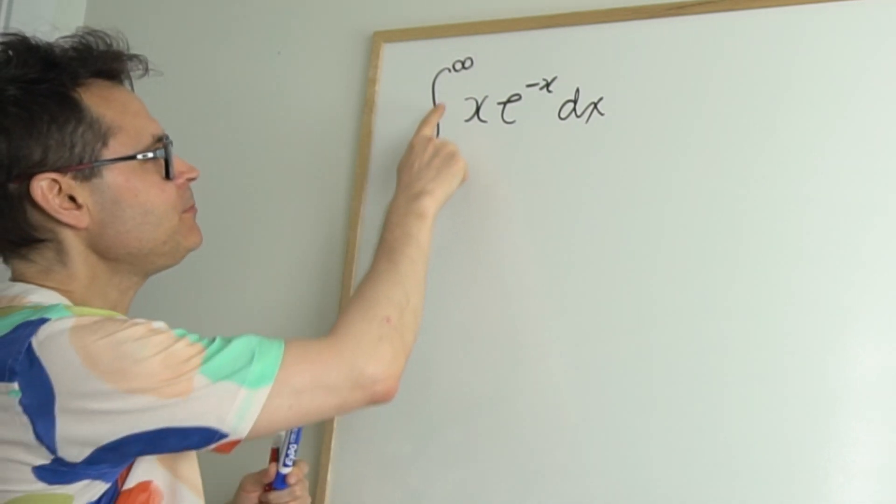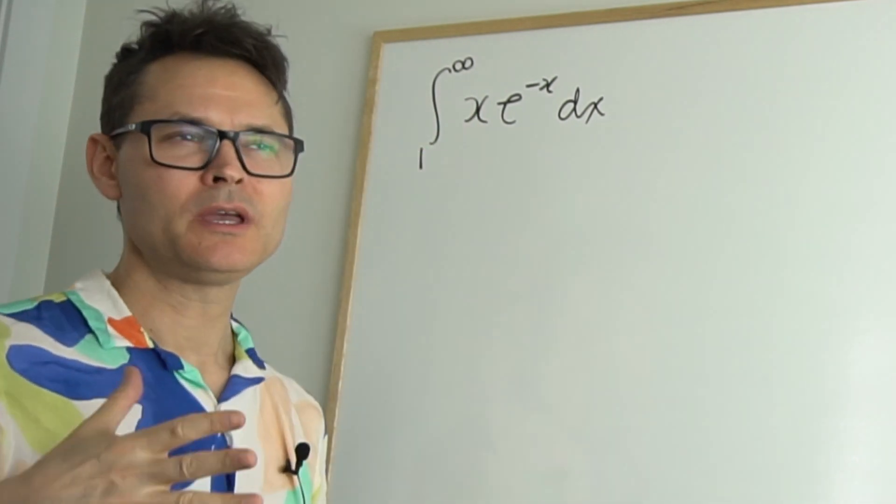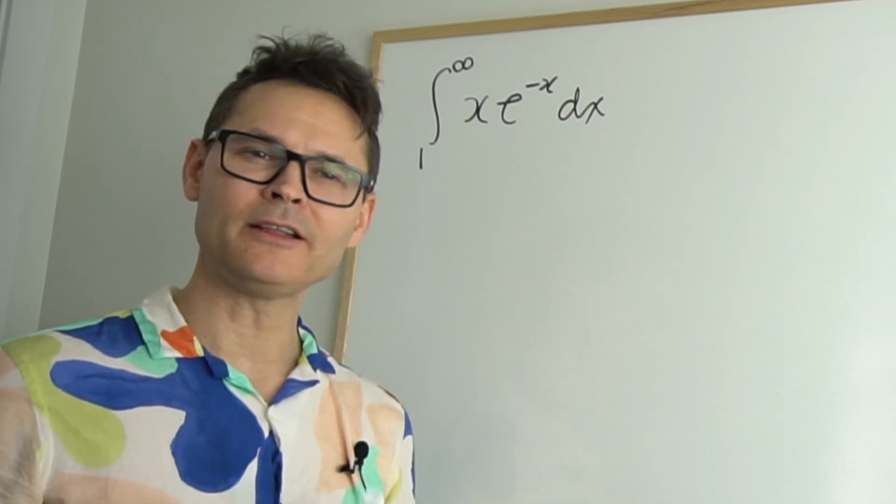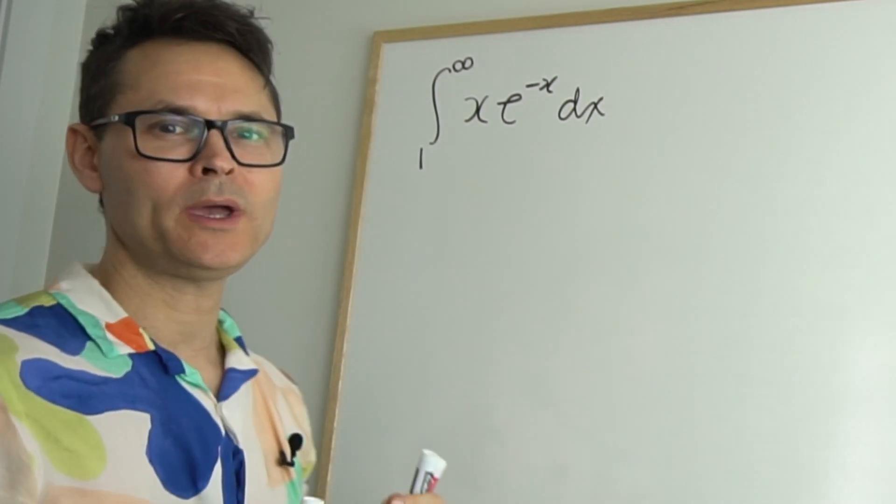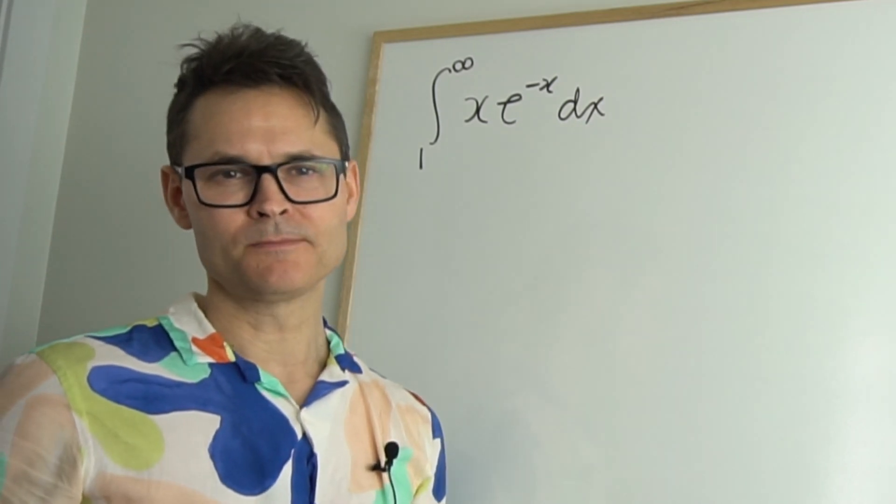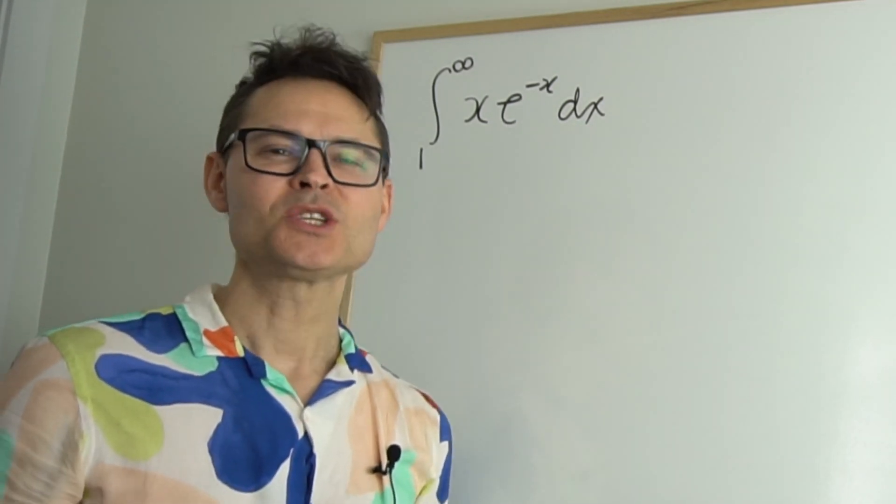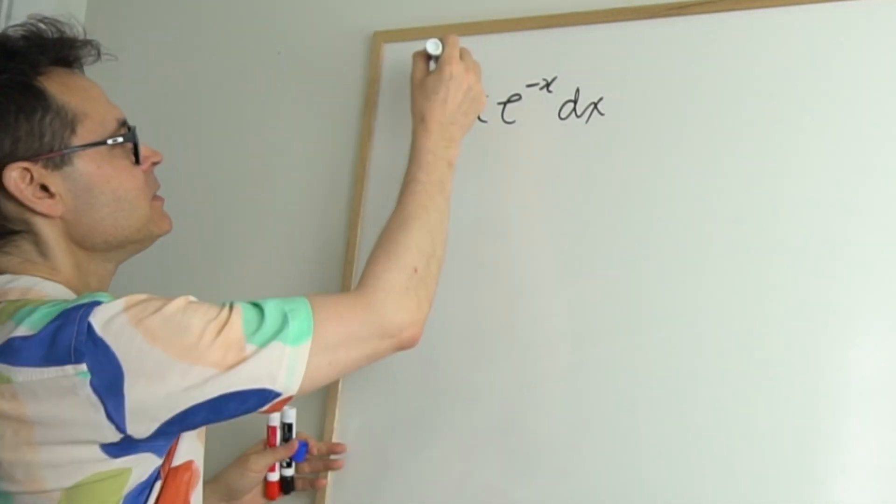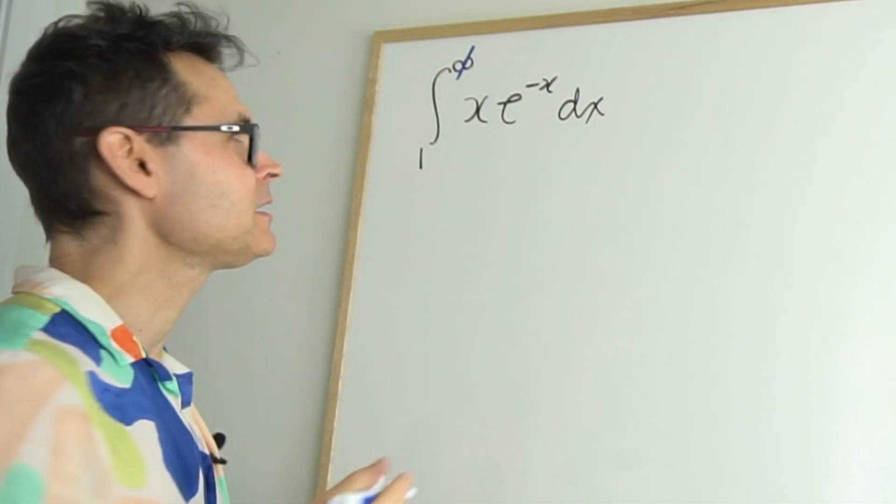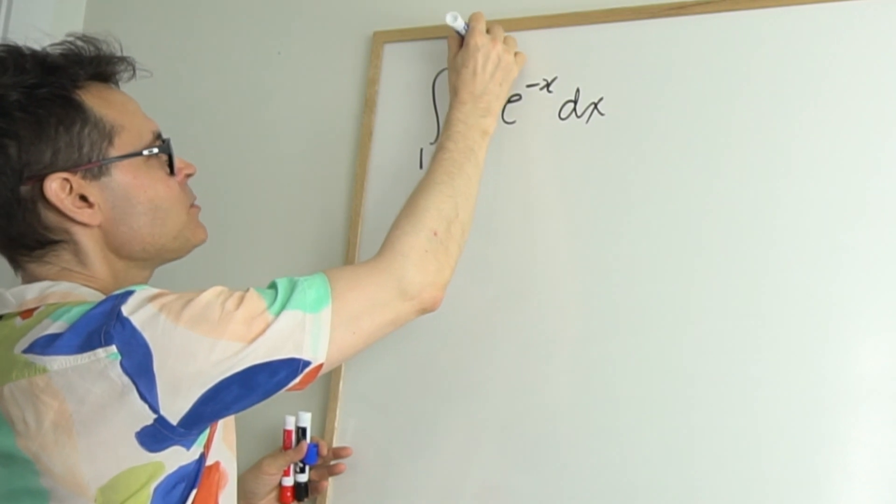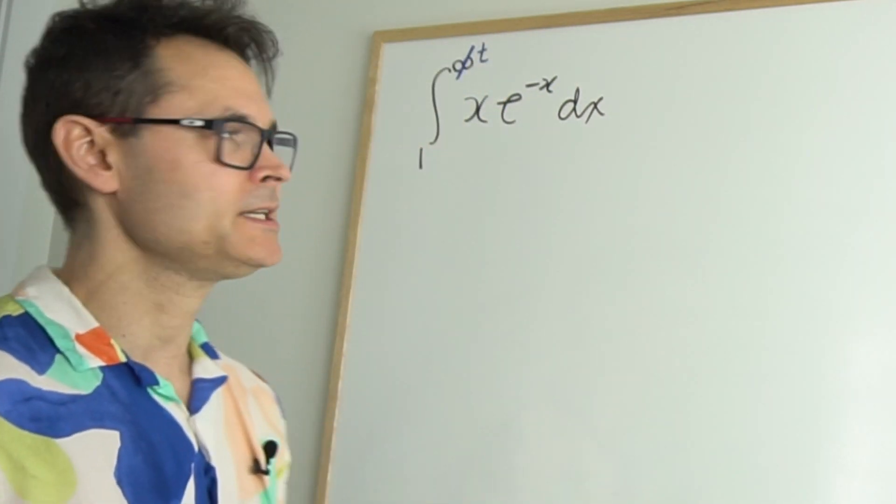The first thing is because these are limits of integration it does imply that we're going to evaluate the integral at one at infinity at some point. And infinity is not a number. It's an aspiration. So what we do is we do a little replacement. We say we're not going to accept infinity because we can't evaluate it at infinity. So we replace it with our favorite letter in the alphabet. I'm going to choose t.